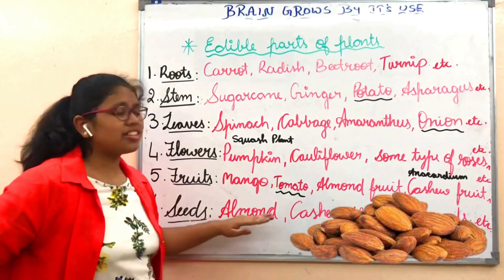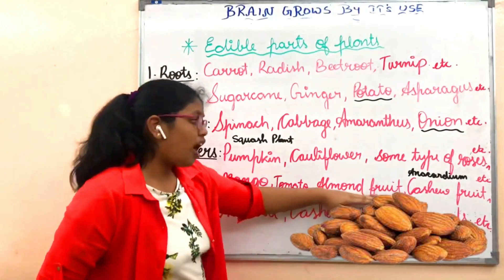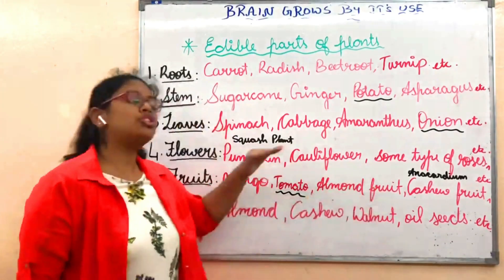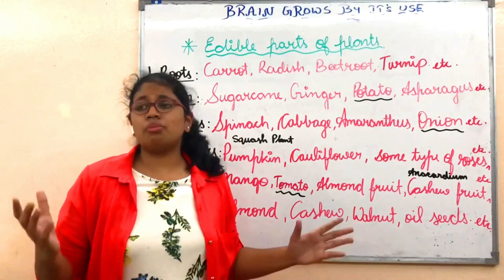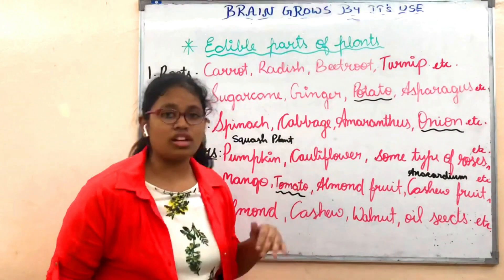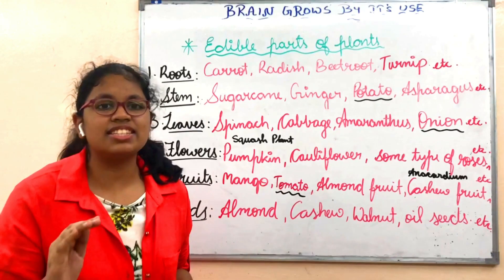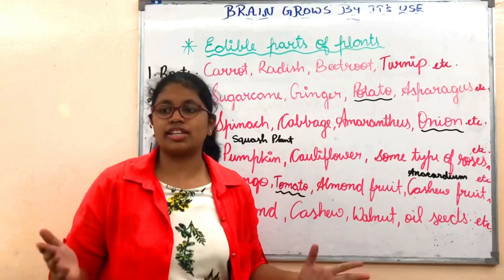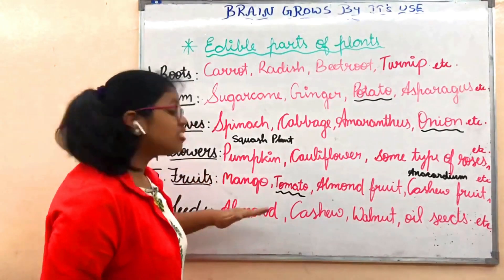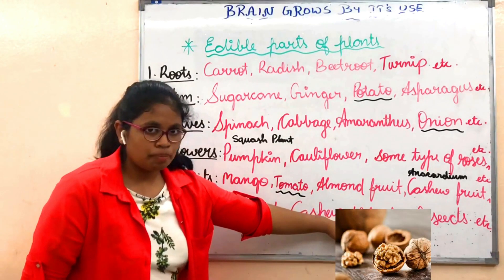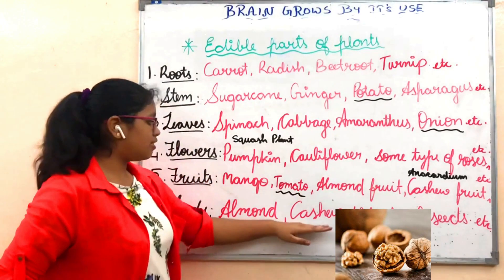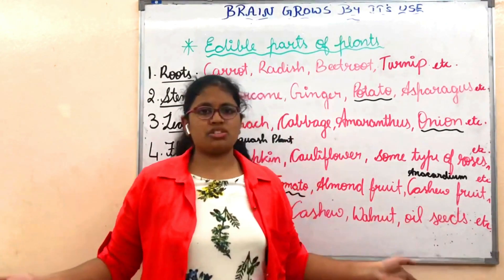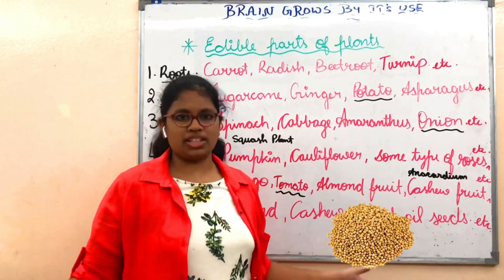Seeds. Almond seeds are inside the almond fruit, just as apple has seeds, almond fruit also has seeds which we eat as almonds. Most of us think almond, cashew, and walnut are nuts, but they are not nuts — they are seeds. Usual nuts are like pine nuts and chestnuts. Even walnut is a seed of a fruit, and cashew is the seed of the cashew fruit. And some oil seeds such as mustard seeds or sunflower seeds are also eaten.